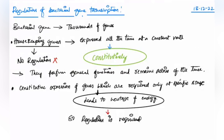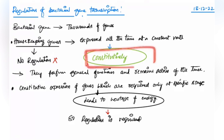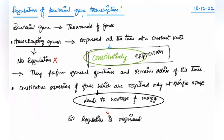Now we'll talk about regulation. Any bacteria contains thousands of genes. Among those, certain genes should be expressed all the time at a constant rate throughout the lifetime. Those genes are categorized as housekeeping genes, and the term for their expression is constitutive expression.